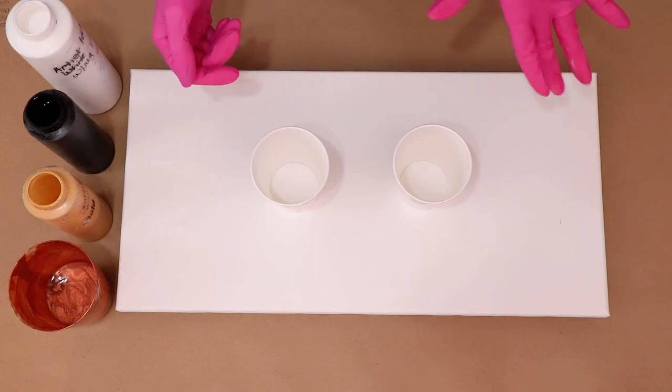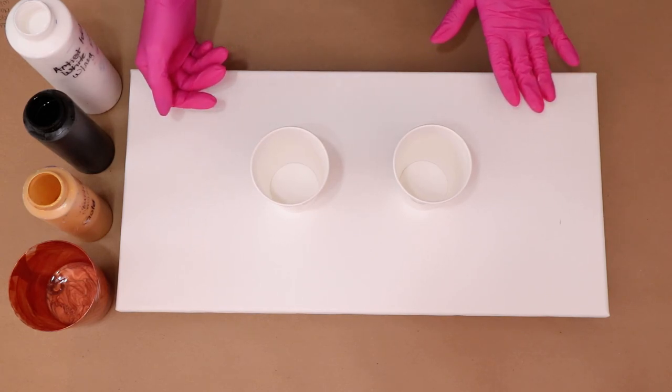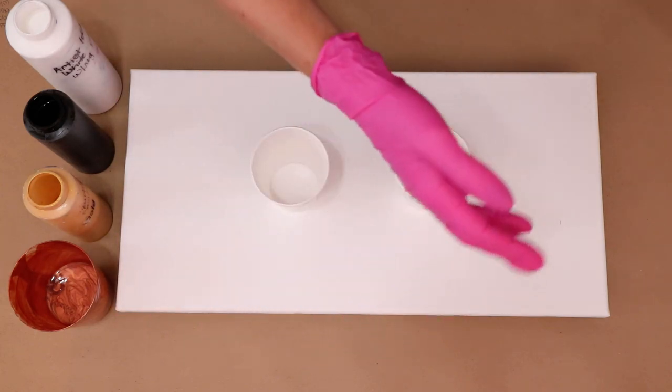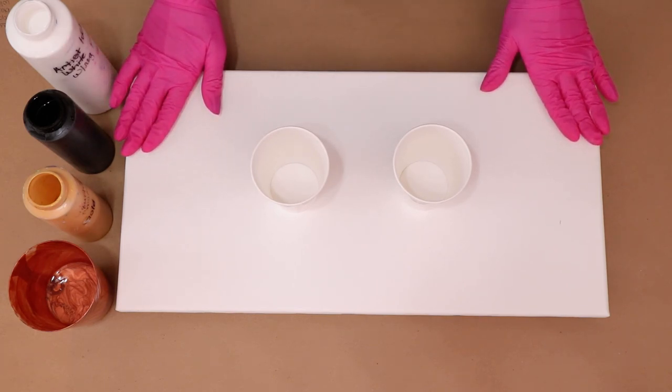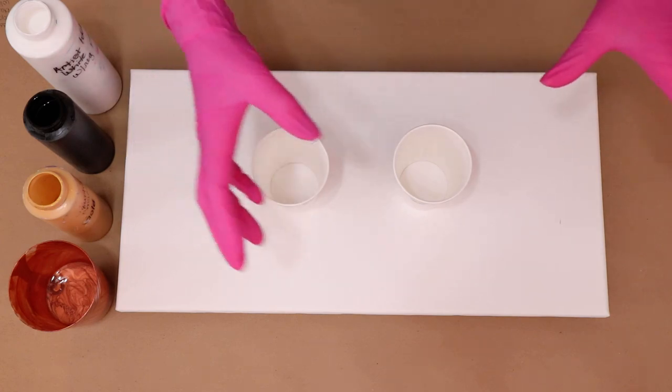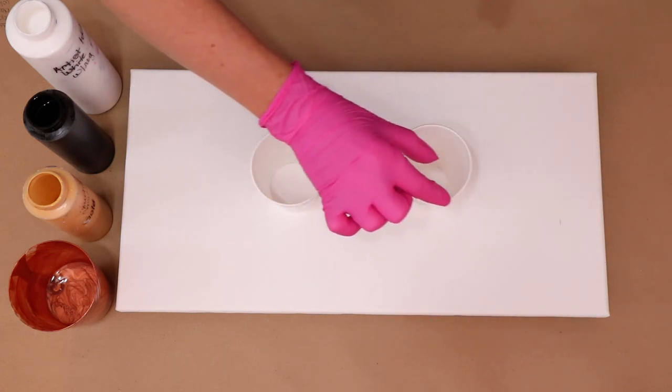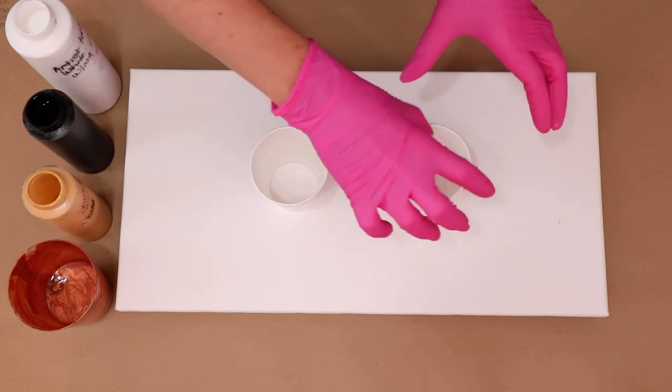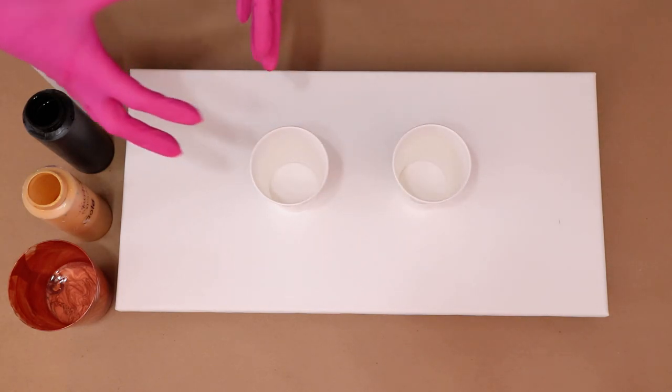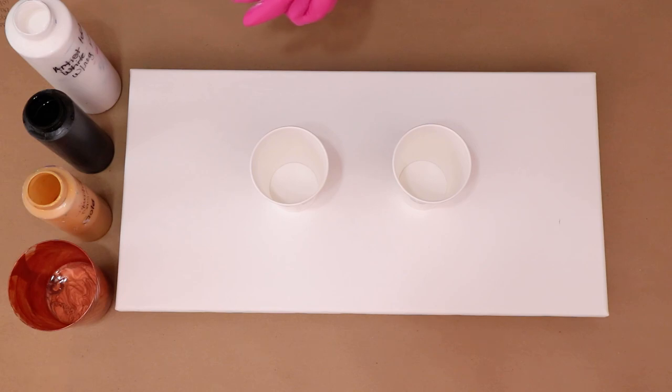I think what happened was I didn't necessarily like the flow of it. The flow was too thin. I put too thin of a layer through the center of the canvas. So this time I'm going to try to dump more out and make a bigger line through the center.